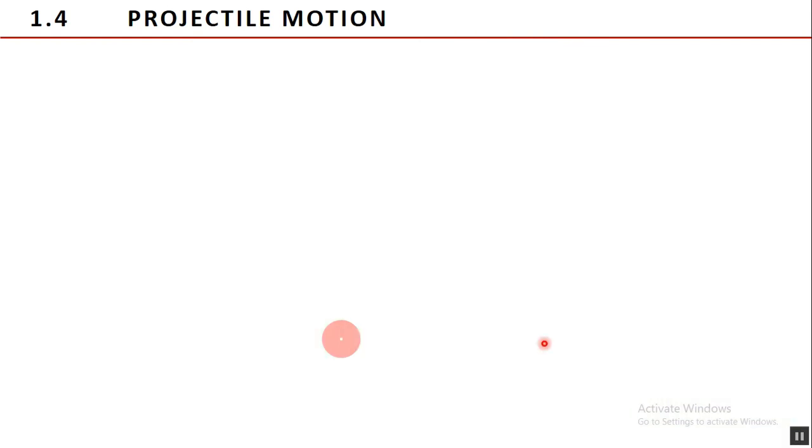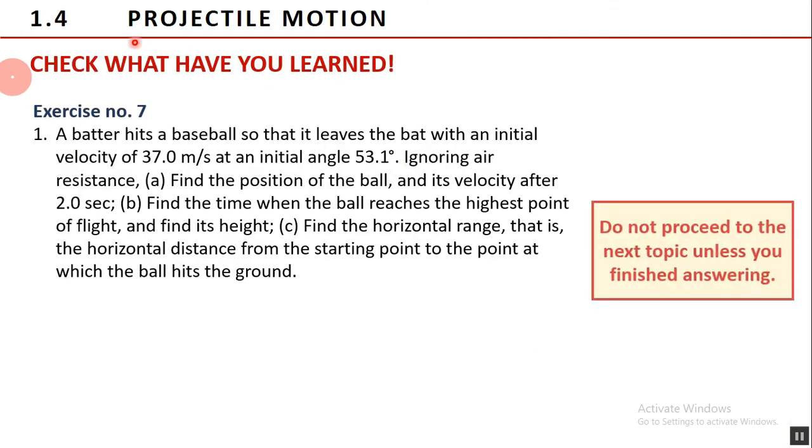Now, it's time to challenge yourself by answering this exercise. Exercise number 7: A batter hits a baseball so that it leaves the bat with an initial velocity of 37 meters per second at an initial angle 53.1 degrees. Ignoring air resistance. Letter A, find the position of the ball and its velocity after 2 seconds. Letter B, find the time when the ball reaches the highest point of flight and find its height. Letter C, find the horizontal range, that is, the horizontal distance from the starting point to the point at which the ball hits the ground. Good luck!